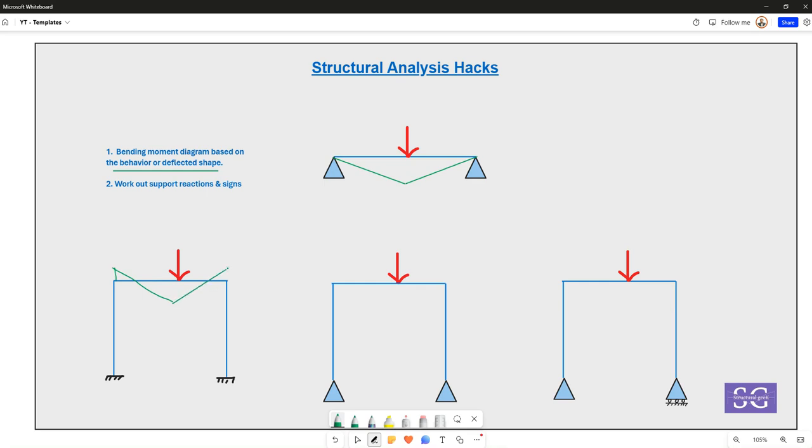Now the moment that you are having at the supports will be transferred to the columns below. As the columns are fixed at the bottom, the sign of the bending moment will be reversed and taken to the supports in the other direction. Similarly for this column, you will have the bending moment over here and reversed to the support. This is typically how a particular bending moment diagram looks like.